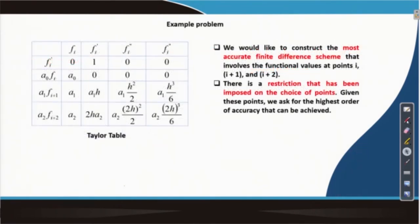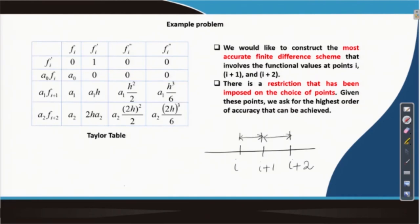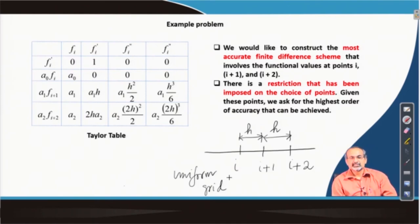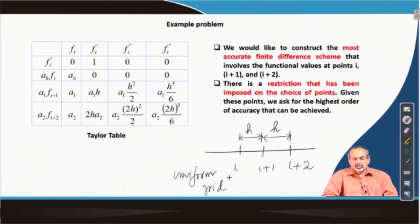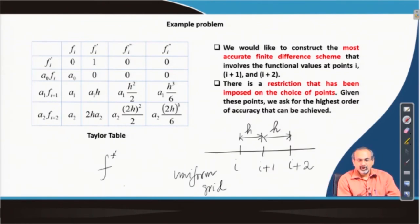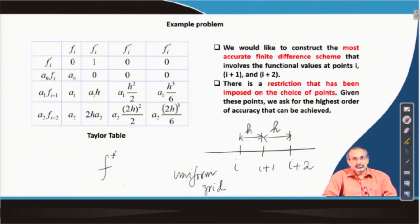Let us take an example problem where we have a stencil comprising three points: i, i plus 1, and i plus 2, using a constant interval between grid points, meaning a uniform grid. Obviously, this is not a centered stencil — it is a skewed stencil and the stencil has been given to us. We have to evolve an expression for f dash, the first derivative, on this given stencil, ensuring that we come up with the highest possible accuracy in the approximation.